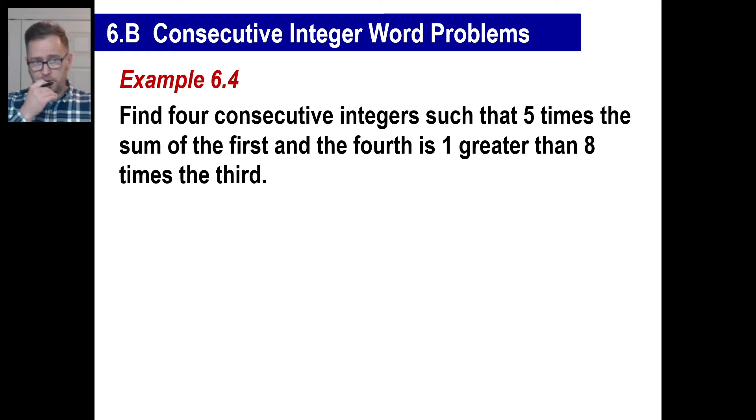So pause and copy if you need to. And the question is, find 4 consecutive integers. Now, do you know what that means? 4 consecutive integers would be like 8, 9, 10, 11. Negative 50, negative 49, negative 48, negative 47. 8, 9, 10, 11. I think I just said that. Anyway, that's what 4 consecutive integers would be. So we're going to make up an equation based on this right here.